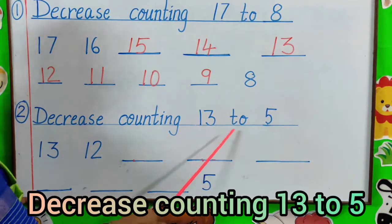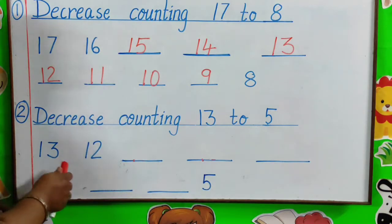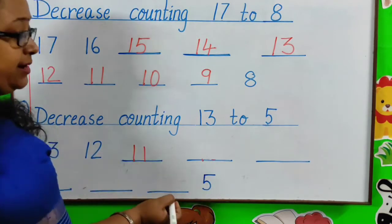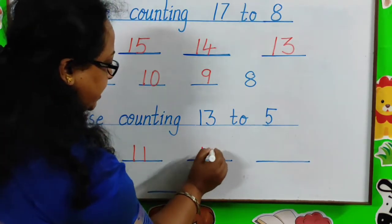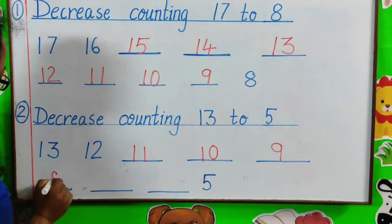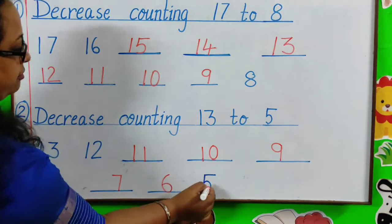Decrease Counting 13-5. Again, we can see bigger number to smaller number. 13, 12, 11, then 10, 9, 8, 7, 6 and 5.